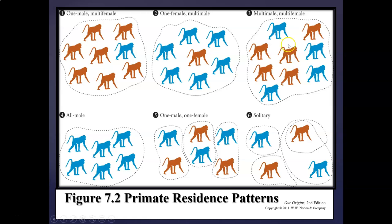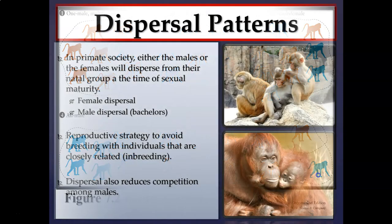Multi-male multi-female groups tend to practice a polygynous mating strategy, where dominant males have increased access to mating with females. The one-male one-female monogamous mating strategy is seen in some strepsirrhines, gibbons, and siamangs. The solitary strategy is really only seen in orangutans — typically the male mates with all females within his range, still practicing polygyny by mating with multiple females in his reproductive range.